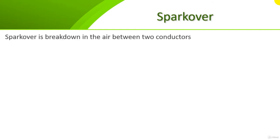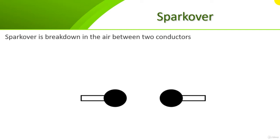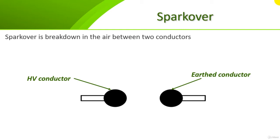Spark over is simply a breakdown in the air only, between two conductors. If we have a high voltage conductor and an earth conductor, a very high voltage difference applied between them creates a high electric field. This high electric field causes electric breakdown in the air, which appears in the form of a spark — called spark over.